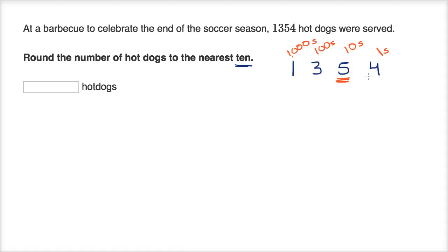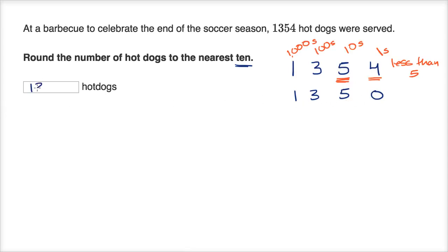Because this number is less than five, we round down. If you round down, you get to exactly five tens, or 1,350. We have rounded to the nearest 10: 1,350 hot dogs.